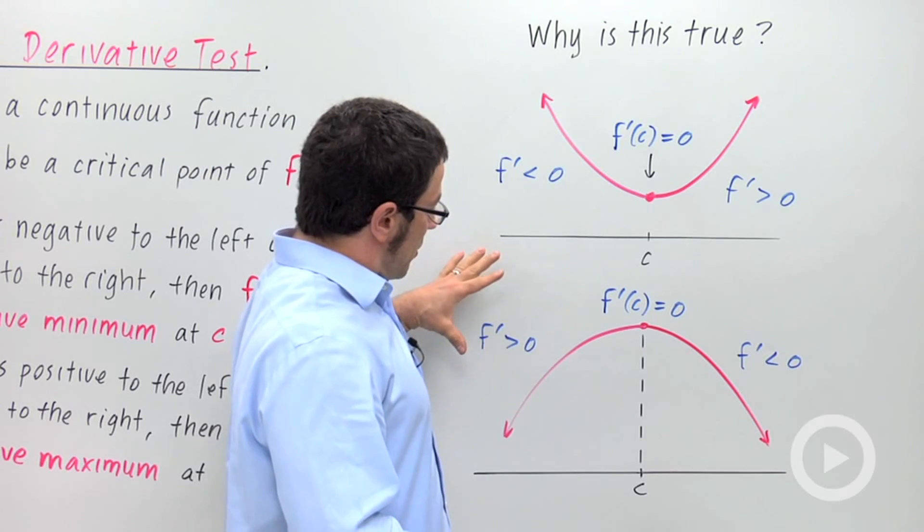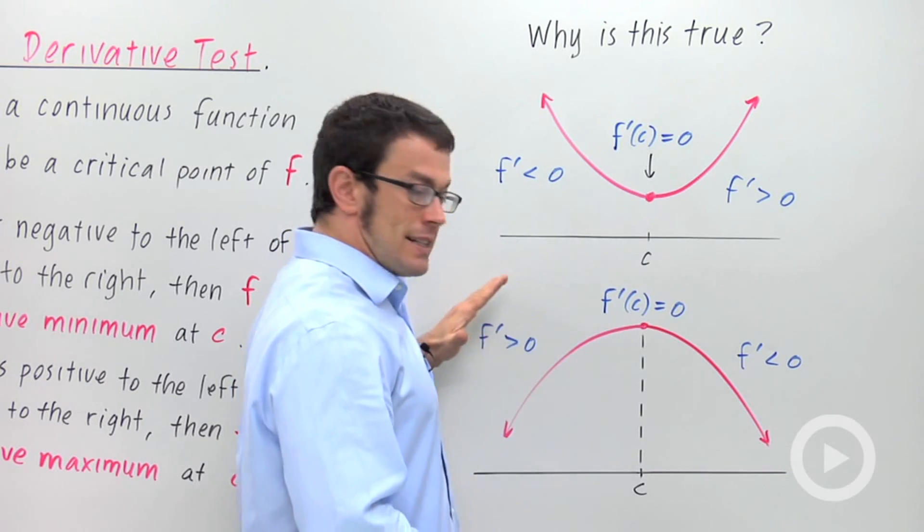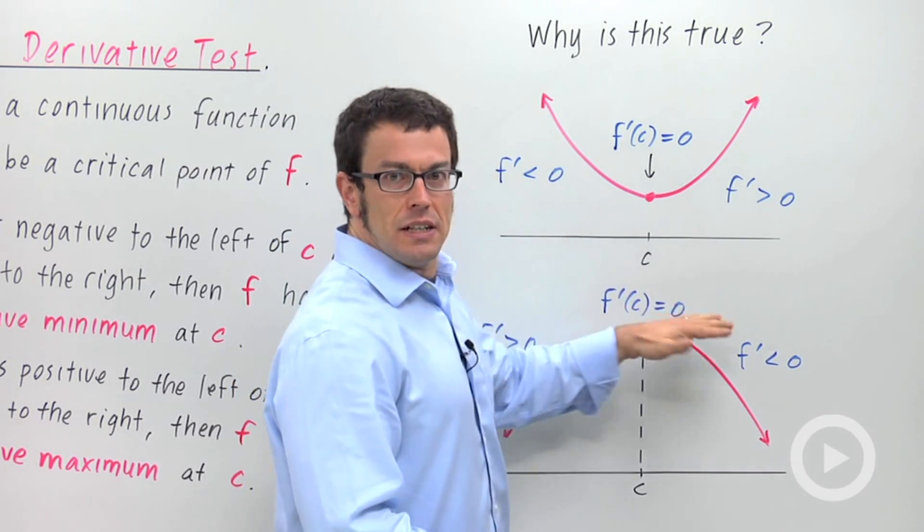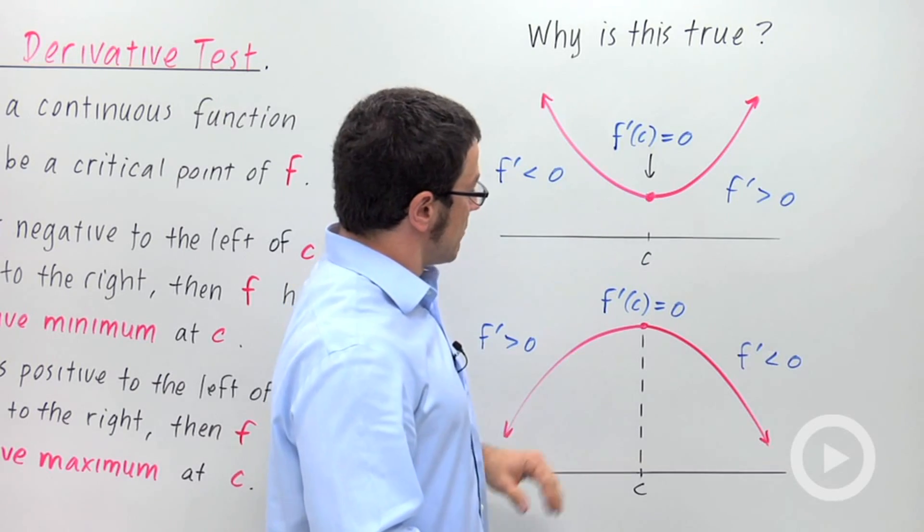So we'll be looking for the function to go from positive to negative. That indicates that it's going from increasing to decreasing. So that's why we get a relative maximum.